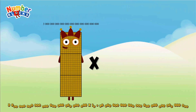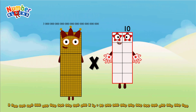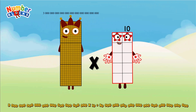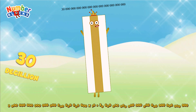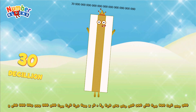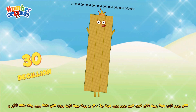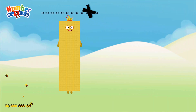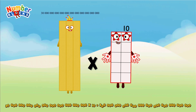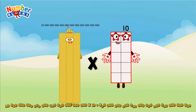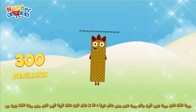3 Decillion multiplicated by 10 equals 30 Decillion. 30 Decillion multiplicated by 10 equals 300 Decillion.